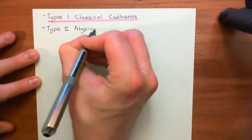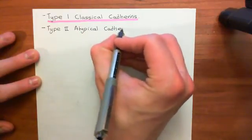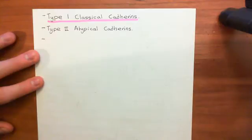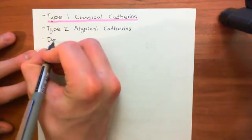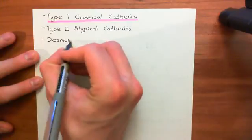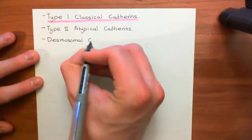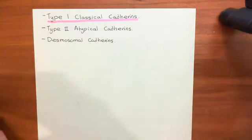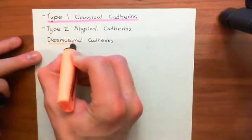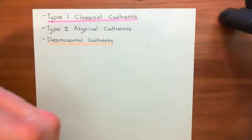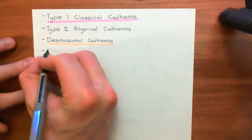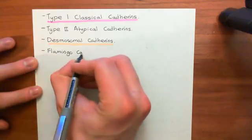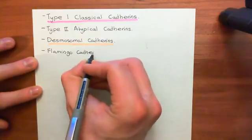We are not going to study the type 2 atypical catherines in this video — we'll just acknowledge that it is a family that exists. The next family we are going to study are the desmosomal catherines, which are involved in the formation of desmosomes, so they're quite important. The final two families we won't study in this video as they're more niche knowledge: the flamingo catherines, and finally the proto-catherines.